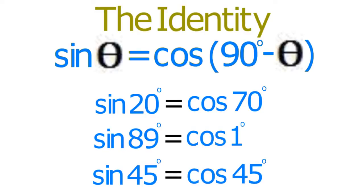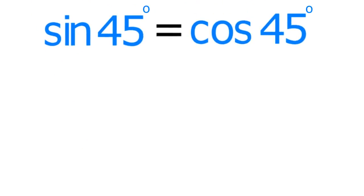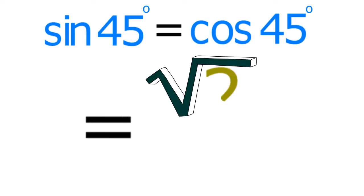This identity also explains why the sine and cosine of 45 degrees have the same numerical value, which you already know to be radical 2 over 2. See you next time.